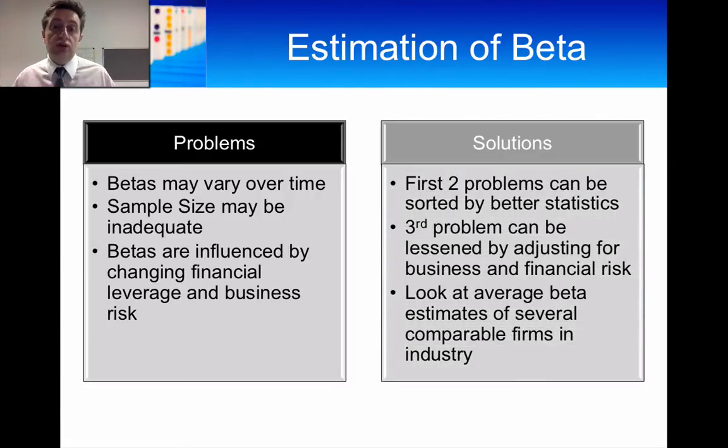So there are not a lot of things that we need to consider when we use real data to estimate betas. We do have some solutions, but the solutions are effectively statistical-type solutions.